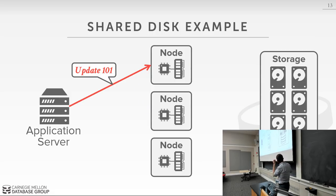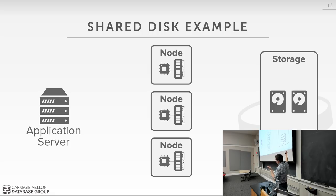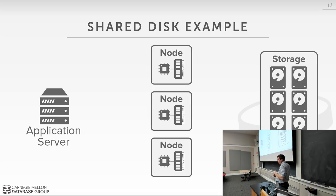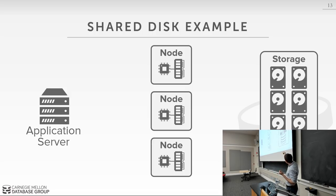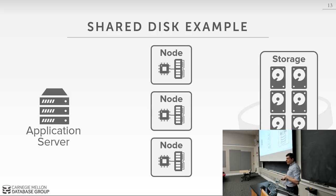The big advantage of shared disk is that these compute nodes are stateless. If I want to scale up the compute layer — add more nodes to execute more queries in parallel — I just bring up a new machine and update the routing table. I don't have to move any data. Similarly, to scale storage, I just add new disk at the storage layer without changing anything in the front end, because those nodes don't care about the underlying storage capacity.